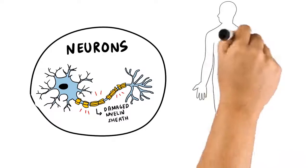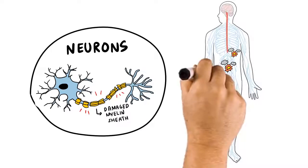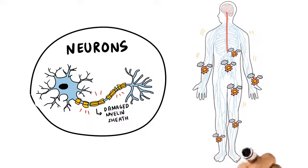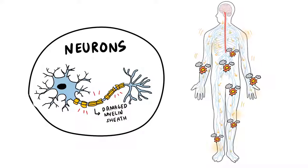But with GBS, the myelin coating around nerves is damaged and removed, which stops the nerves from delivering their messages properly.